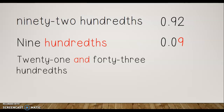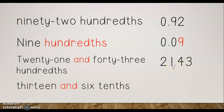Let's try a bigger one — '21 and 43 hundredths.' The 'and' tells me that what's before it is my whole number, so I have 21, then my decimal point for 'and.' Behind it I need to see 43, and it has to fit into my hundredths place value — I can't go past the hundredths place. Notice that 43 ends in the hundredths place, so I have 21 and 43 hundredths.